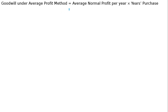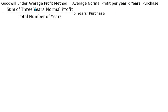That is: Goodwill = Average Normal Profit Per Year × Years Purchase, where Average Normal Profit Per Year = Sum of 3 years of normal profit divided by total number of years. Sum of 3 years of normal profit means we calculate normal profit for all 3 years.